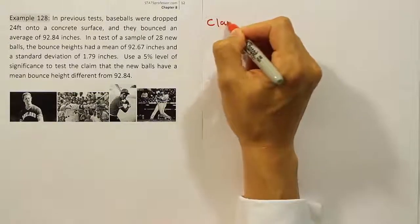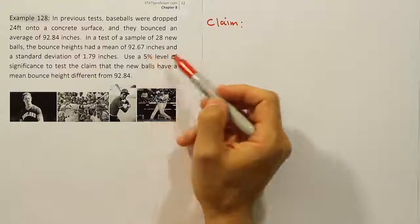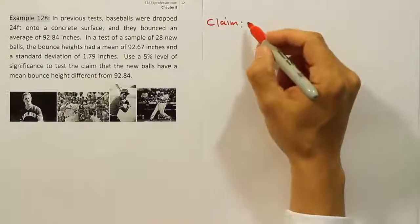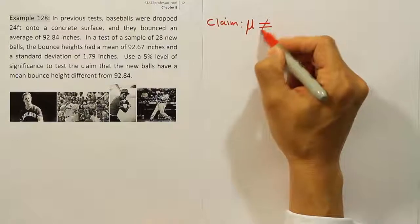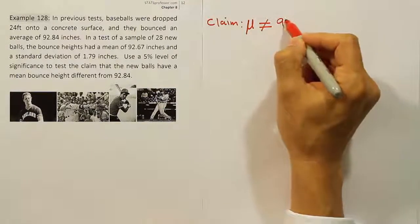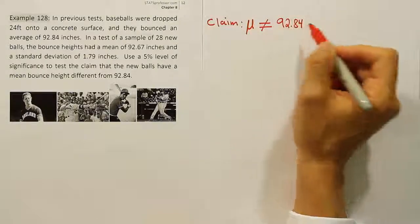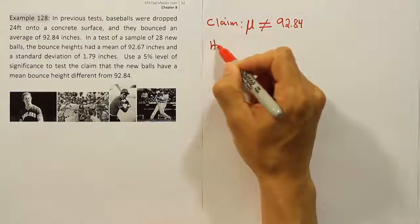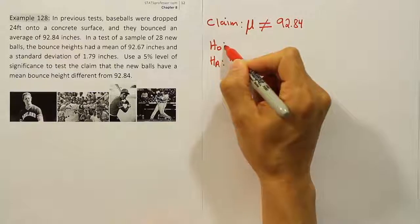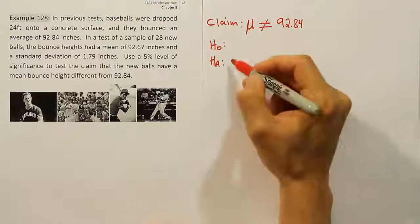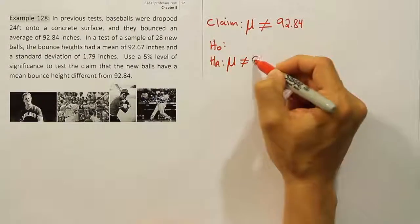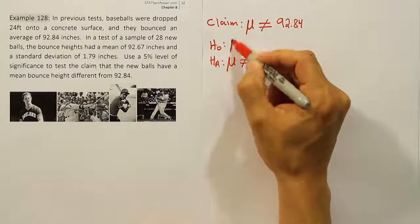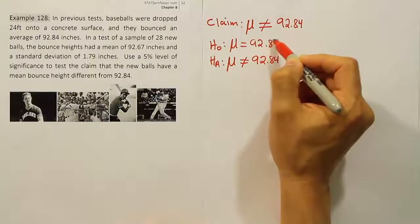The claim in the problem that they ask us to test is: use a 5% level of significance to test the claim that the new balls have a mean bounce height that's different from 92.84. Now different from means not equal to. So we can't say less, we can't say greater than, we just have to say not equal to. Now the null hypothesis and the alternative, in this particular case, because of the not equal to here in the claim, we're going to say the alternative hypothesis H_A: μ ≠ 92.84. The null hypothesis then is going to be the opposite of that, which is H_0: μ = 92.84.